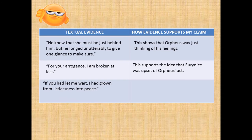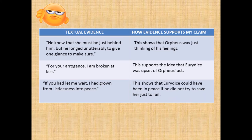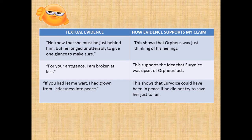And the last evidence is: 'If you had let me wait, I had grown from listlessness into peace.' This shows that Eurydice could have been at peace if he did not try to save her just to fail. The last evidence also shows that Eurydice was becoming accustomed to the underworld, but Orpheus gave her a new hope — that is why Eurydice was very upset.